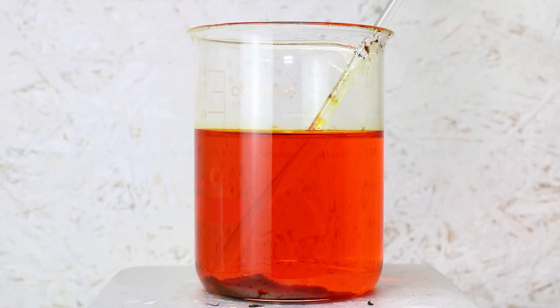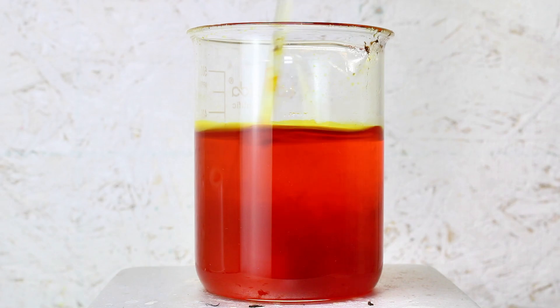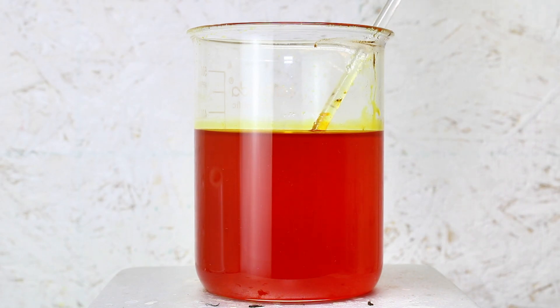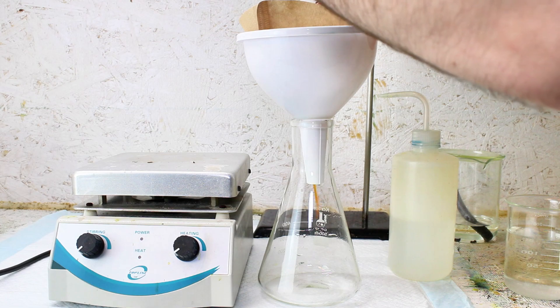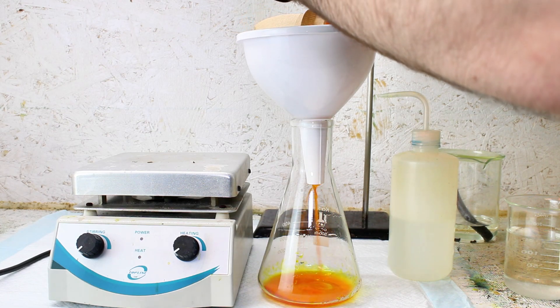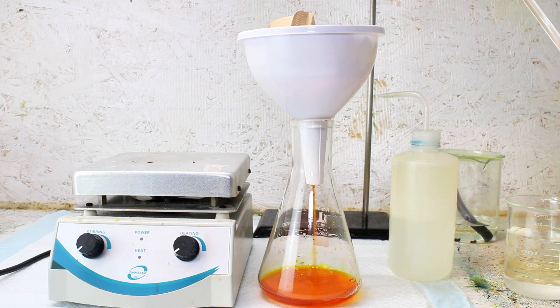I gently heated this mixture and gave it the occasional stir to help it along, but even after leaving it overnight and adding a decent excess of bleach, there was a bit of sediment at the bottom that refused to oxidize. I eventually gave up and went ahead and passed the solution through a filter again to remove this and leave a perfectly clear solution of dark orange dichromate.